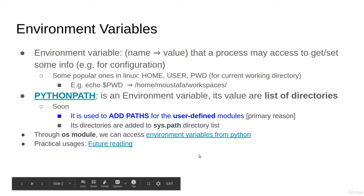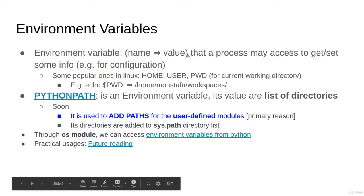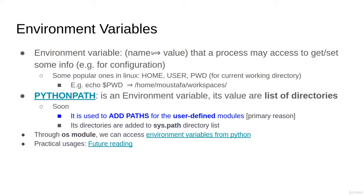There is something called environment variables, and this exists in every operating system like Windows, Linux, Mac, and so on. An environment variable is just a name and a value — think of it like a dictionary. There is a name of the variable and its value, and typically programs or modules that you run may access, get, or set some of this information. One great usage for that is configuration.